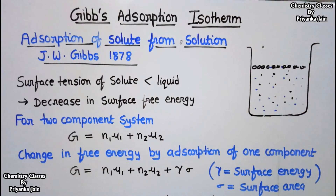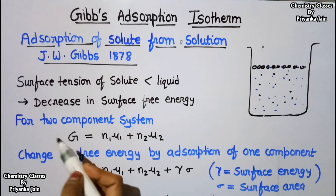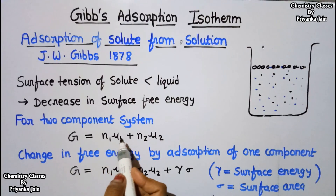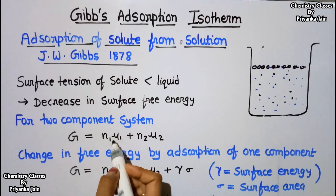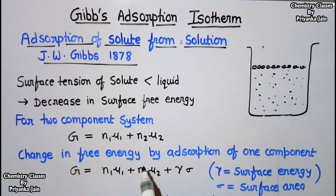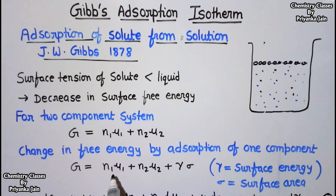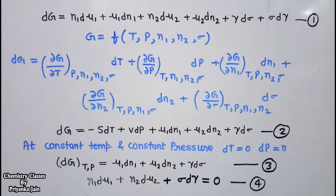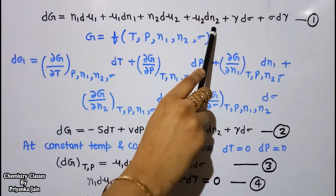For this two-component system — component one being the liquid and component two the solute — the Gibbs free energy is given by: G = n₁μ₁ + n₂μ₂, where n₁ and n₂ are the number of moles of the liquid and solute, and μ₁ and μ₂ are their chemical potentials. Including adsorption, this becomes G = n₁μ₁ + n₂μ₂ + γσ, where γ is the surface energy and σ is the surface area. Differentiating gives: dG = n₁dμ₁ + μ₁dn₁ + n₂dμ₂ + μ₂dn₂ + γdσ + σdγ. This is equation one.